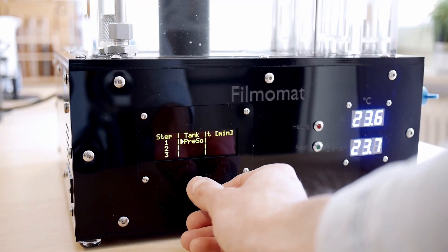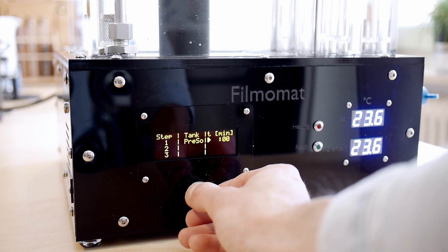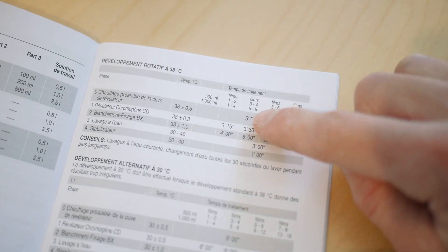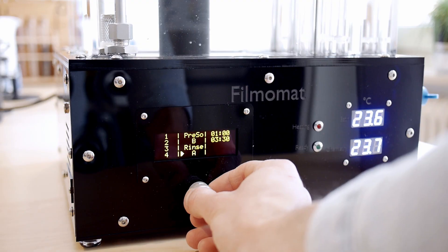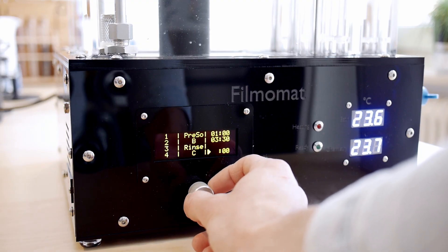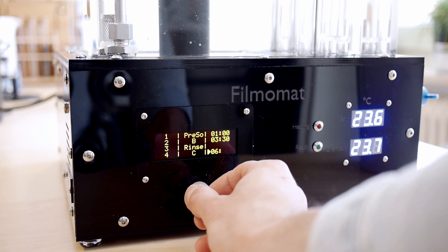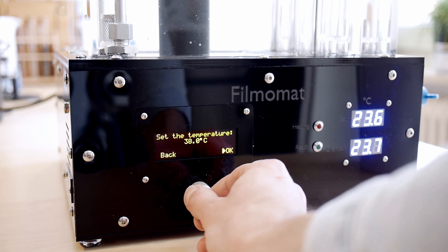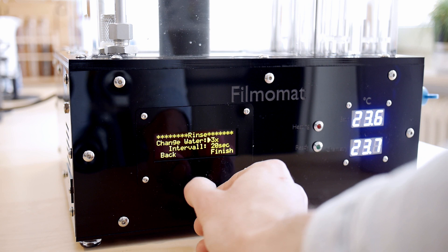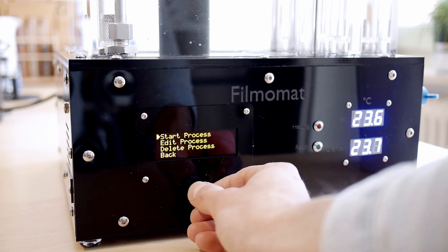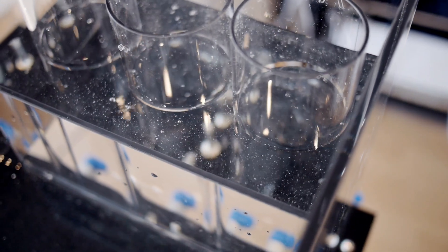All right, so let's quickly generate a new process. Here I just use the values given in the instruction manual of the titan oil chemistry, and then I specify the temperature and the rinsing pattern.